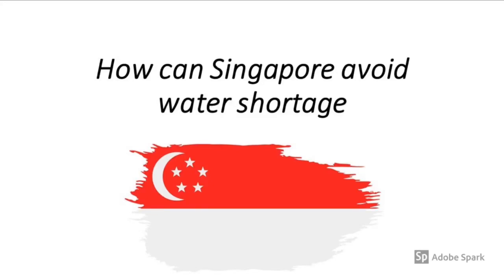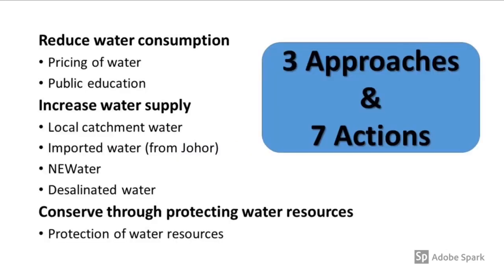Welcome to the lesson. Today we're going to cover the final section of Chapter 4 on water resources — specifically how Singapore can avoid water shortage. Singapore has adopted three approaches and seven individual actions to help resolve this problem, and today we will be looking at all of them.